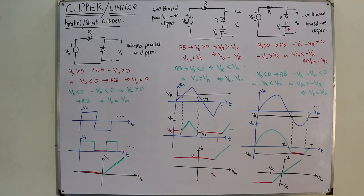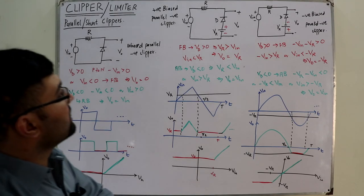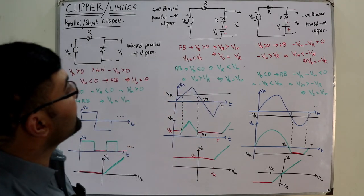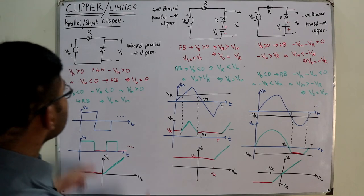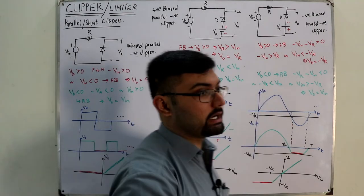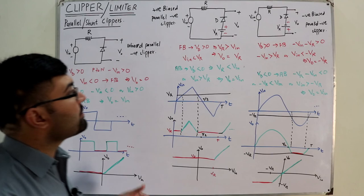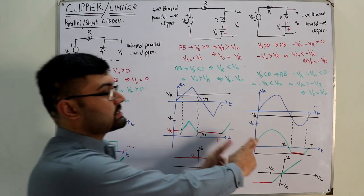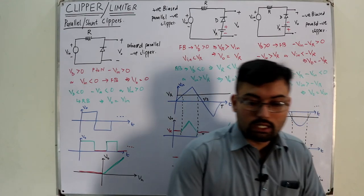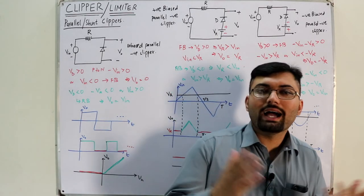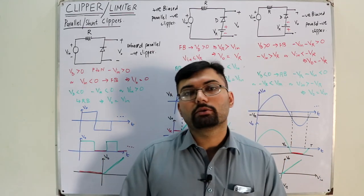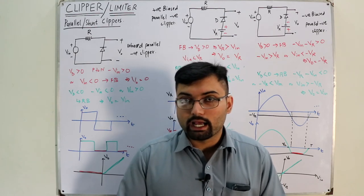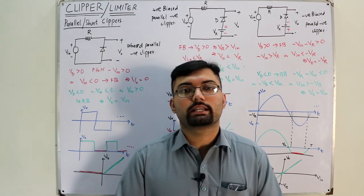These are some very interesting lectures on clippers and limiter circuits. We have covered the parallel negative clipper in three cases: unbiased, positive biased, and negative biased. In the next video, we will see the parallel positive clippers — unbiased, positive biased, and negative biased. If you have any doubts or feedback, please let me know in the comments. See you in the next one. Take care. Goodbye.